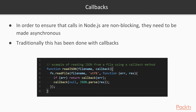In order to ensure that calls in Node.js are non-blocking they need to be made asynchronous. Traditionally that has been done with callbacks. As you can see here, there's a function called read.json that when called uses the file system to read a file. When the file system's read file method is completed, a function is triggered that contains a callback passed to the read.json call.